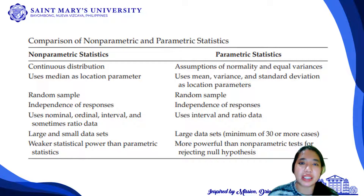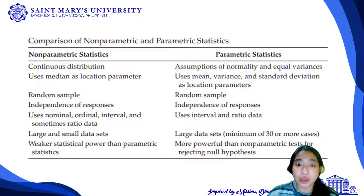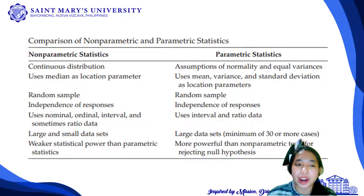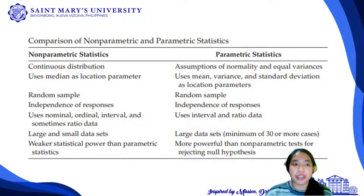For both non-parametric and parametric statistics, we must consider random sampling to avoid bias, and independence of responses. For non-parametric statistics, we use this test even if we have nominal, ordinal, or interval data, and even sometimes ratio data, especially whenever the data is not normally distributed. While for parametric statistics, the requirement is that it must be at least interval — so it uses interval and ratio data.